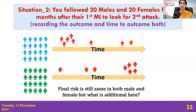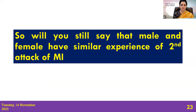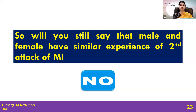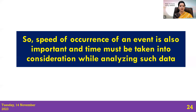So would you say that male and female have a similar experience of the second attack of MI? The answer is no. The speed of occurrence of an event is also important, and time must be taken into consideration when we have that data while analyzing.